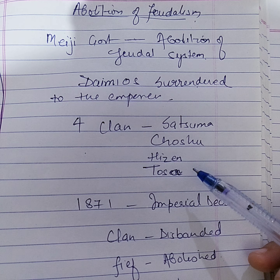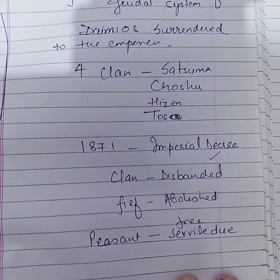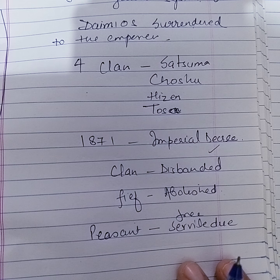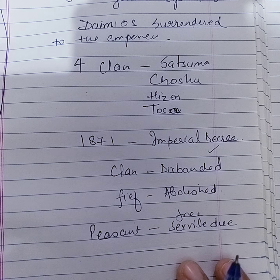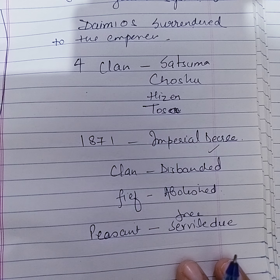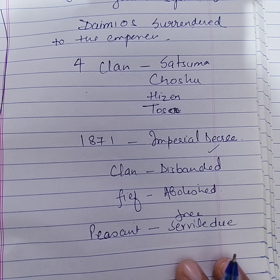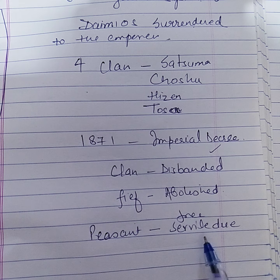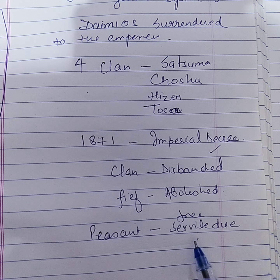In August 1871, feudalism was formally abolished by an imperial decree. The clans were disbanded, and Japan was reorganized into prefectures on the French pattern. The ex-daimyo and certain other leaders in the revolution were rewarded with new titles of nobility borrowed from European usage, with high offices and ample salaries under the new centralized government. The peasants were freed from servile dues and made owners of the land they tilled, becoming directly subject to the empire.